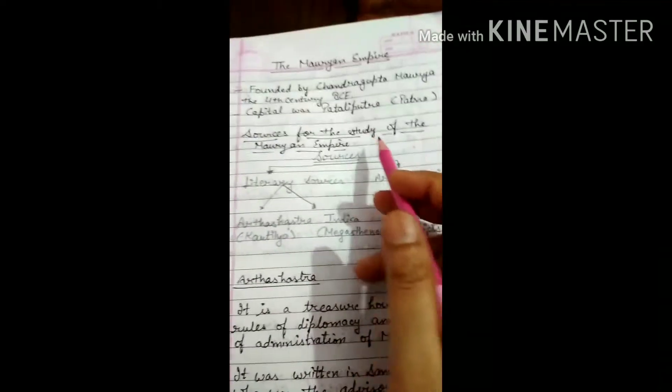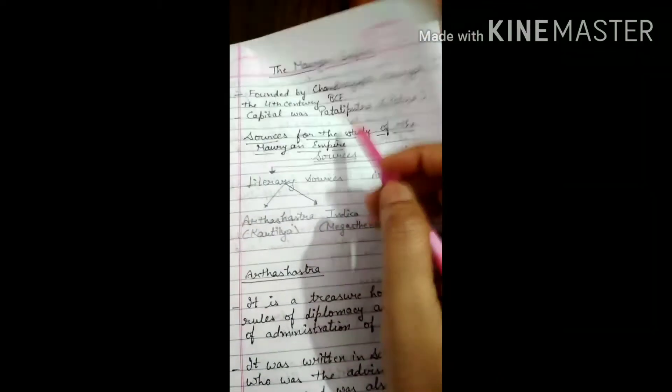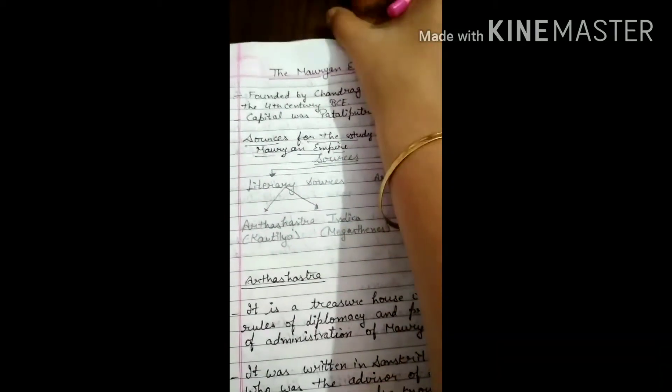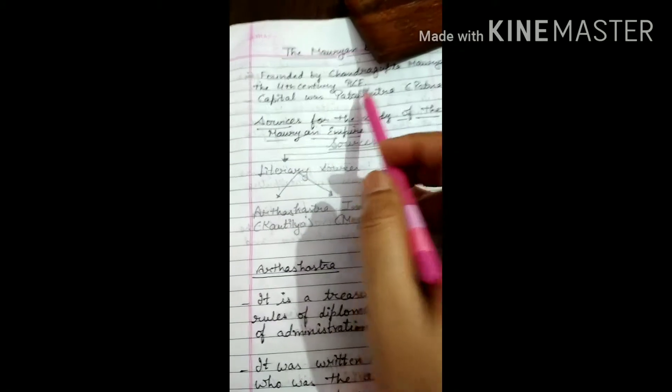And Pataliputra, which is today's Patna, was its capital city. It was such a big area in India which was under the first time king, and he was Chandragupta Maurya. The capital was Pataliputra and he founded the Mauryan Empire in the 4th century BCE.